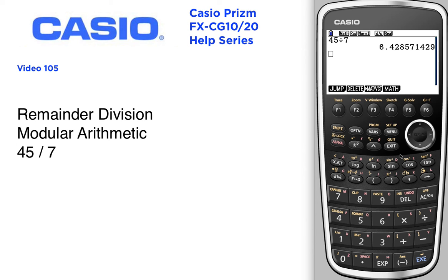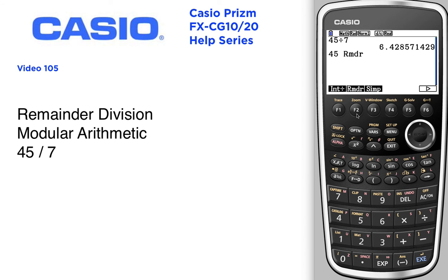It's a little difficult to see the remainder there, so let's find a way to do this. We'll type in 45, then press Option to calculate, toggle over a few times to RMDR, which stands for remainder. What's the remainder when you divide 45 by 7? The answer is 3.